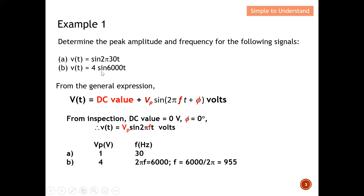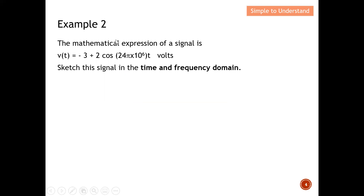For the second signal, Vp is equal to 4. The frequency requires some computation: since 2πft corresponds to sin(6000t), we have 2πf = 6000. Dividing both sides by 2π gives a frequency of approximately 955 Hz. That completes Example 1.